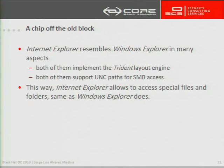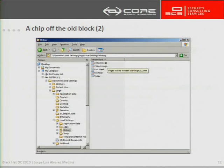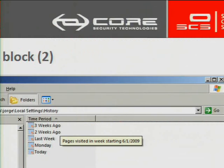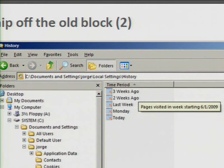This way, Internet Explorer lets you perform some of the same tricks Windows Explorer does. For example, when using Windows Explorer to access the history folder, what is shown is not the actual content of the folder, but some kind of schedule so the user can browse it that way.